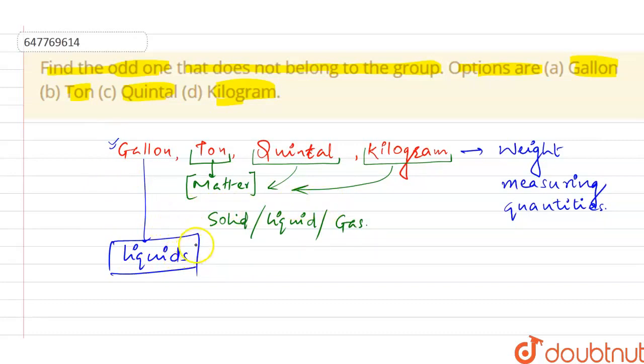We have to take gallon away from these three. These three have a common property, so the fourth one will be the answer. All right, students. So according to this, option number A will be your correct answer, students. Okay? Thank you so much. I hope you understand the concept.